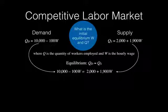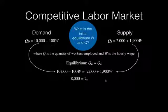We have 10,000 minus 100W is equal to 2,000 plus 1,900W. If we add 100W to both sides and subtract 2,000 from both sides, we end up with 8,000 equals 2,000W. Dividing both sides by 2,000, we get that the wage rate is equal to 4. So we've determined the equilibrium wage rate.